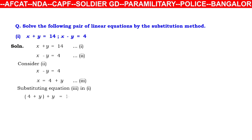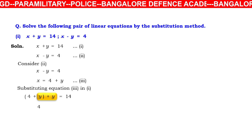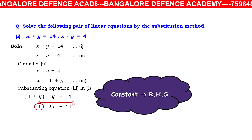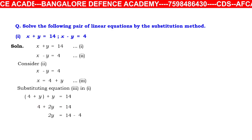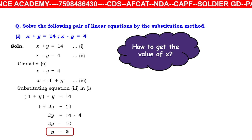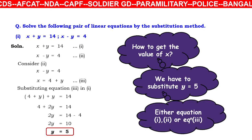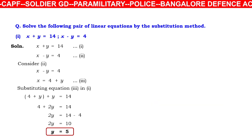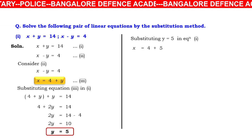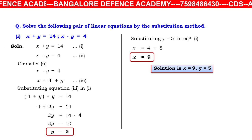Substituting x = 4 + y into equation 1: (4 + y) + y = 14, giving 4 + 2y = 14, so 2y = 10 and y = 5. Substituting y = 5 into equation 3: x = 4 + 5 = 9. The solution is x = 9 and y = 5.